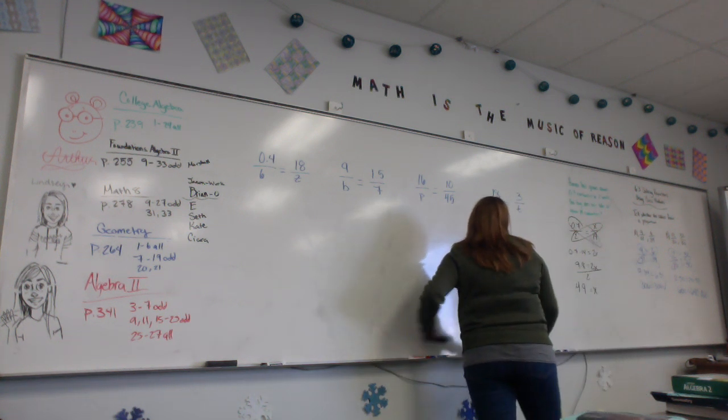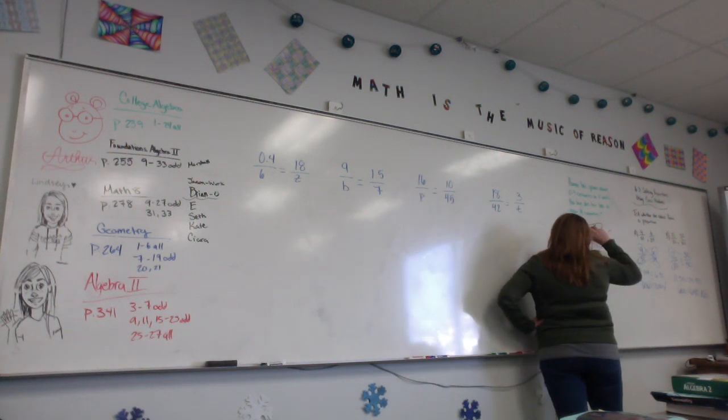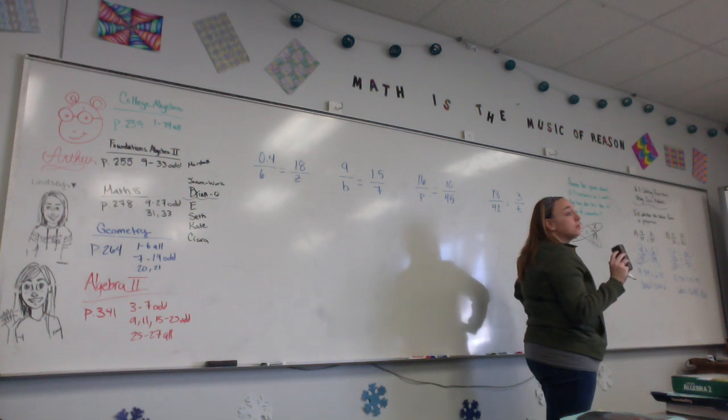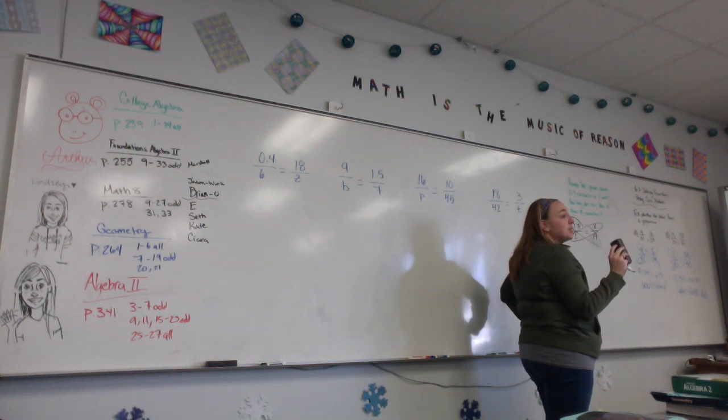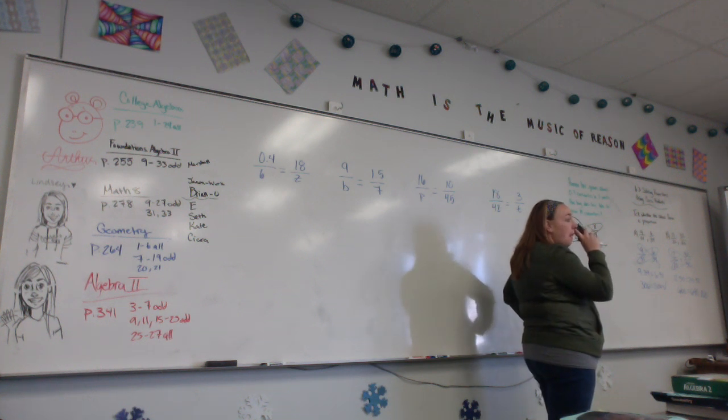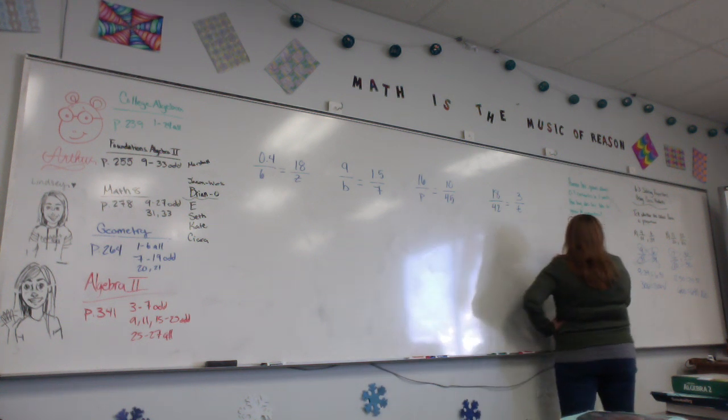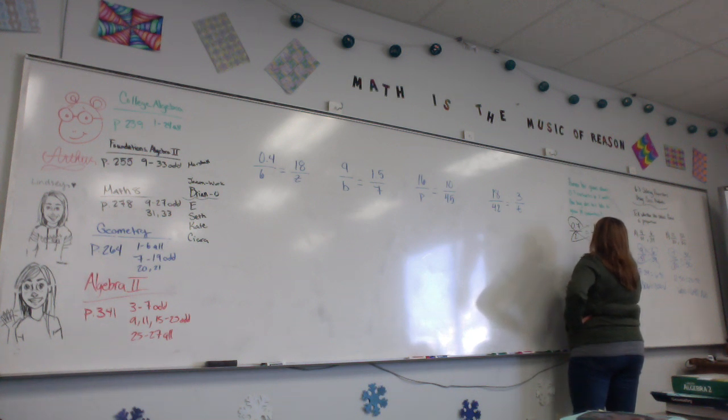So what did we do wrong with our proportion? We set it up wrong. X should be on the bottom because 14 goes with your hair length. 0.7 is your hair length. So I should set it up this way.